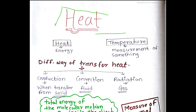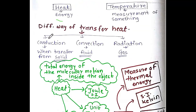We are going to start with heat and cover this chapter. What is heat? Heat means energy. Temperature means measurement of something. So when we measure energy that is temperature, there are different ways of transfer. This is a 3D diagram and we have a flow chart to start with.